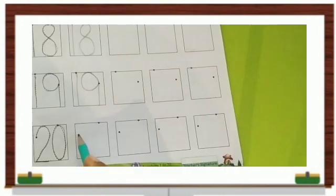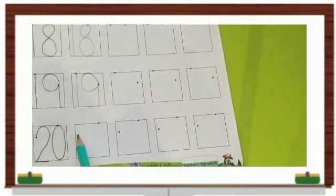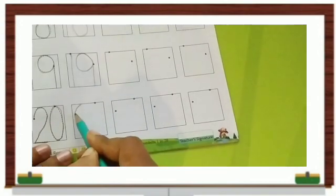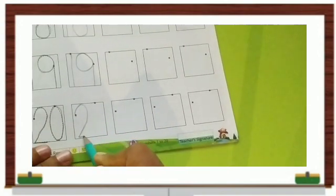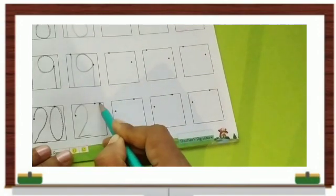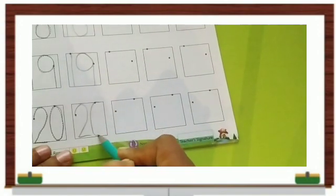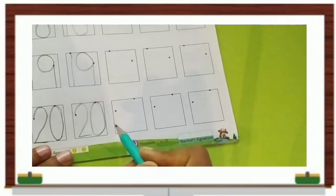Then we write number 20. From this dot we will write 2, and for the other dot we will write 0, and it becomes 20.